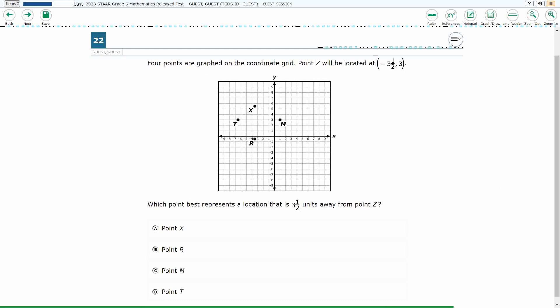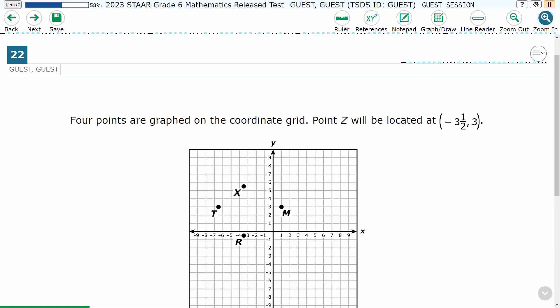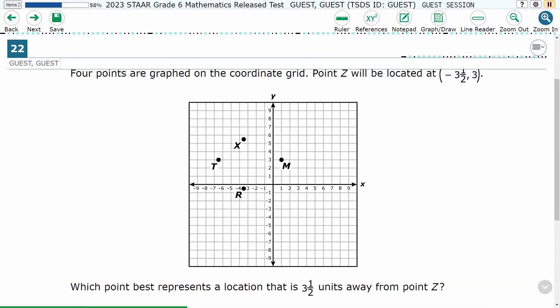Alright, so we've got 4 points here: X, R, M, and T. But we need to plot point Z here, and it's not even on the graph. So let's zoom in a little bit so we can have a little bit better. There we go.